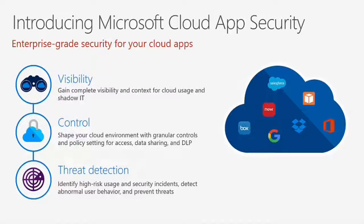Cloud App Security also provides control: you can shape your cloud environment with granular controls and policy settings for access, data sharing, and data loss prevention. And then threat detection: identify high-risk usage and security incidents, detect abnormal user behavior, and prevent threats. In practice, this means having visibility of where people are connecting, controlling what they're sending in emails or sharing on Dropbox or Salesforce, and determining what threats might be present.